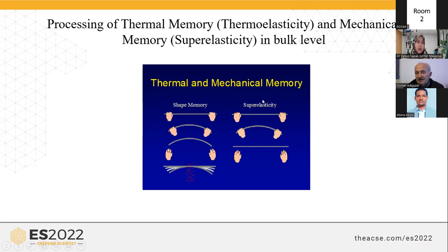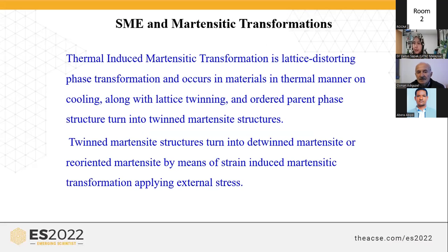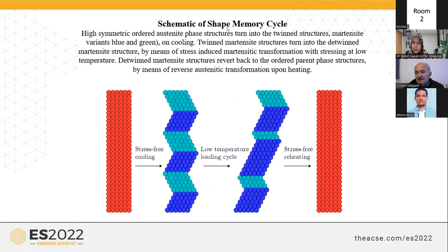In superelasticity, materials are stressed within the elasticity limit in the parent phase region, and upon releasing, the material recovers its original shape by exhibiting elastic material behavior. Thermal-induced martensitic transformation is a lattice-distorting, fast transformation that occurs in the material on cooling, along with lattice twinning; the ordered parent phase structures turn into twinned martensitic structures. Twinned martensitic structures turn into detwinned or reoriented martensite structures by means of stress-induced martensitic transformation when external stress is applied. This is the schematic of the shape memory cycle at the crystallographic level. Shape memory effect and superelasticity are observed in the metastable beta phase region of the material, and the ordered parent phase structure is essential.